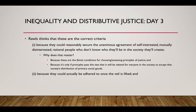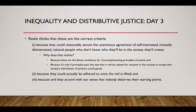Second, Rawls thinks these are correct criteria because they could actually be adhered to once the veil is lifted. These are principles where, if you know that the worst off person in your society is as well off as they could possibly be under any distribution, then you can actually live with the society just generated. And Rawls also thinks these are the correct criteria because they accord with our sense that nobody deserves their starting points. The fact that we're born unequal in various ways is not itself unjust, but we shouldn't let these morally arbitrary contingencies of birth and background determine what our life prospects are going to be.